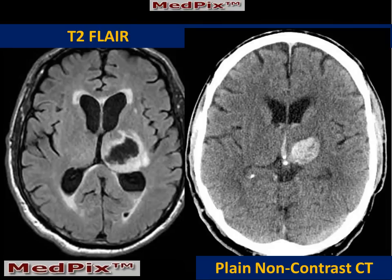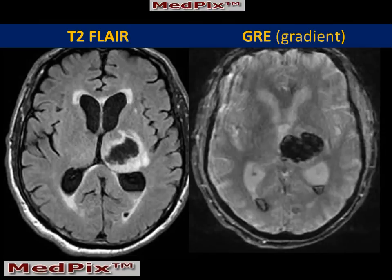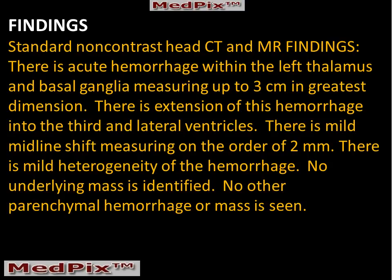The MR scan demonstrates a heterogeneous lesion in the left thalamus with an appearance consistent with acute hemorrhage. In addition, the gradient image confirms a susceptibility change due to acute hemorrhage, as well as blood being identified within the dependent portions of both lateral ventricles.